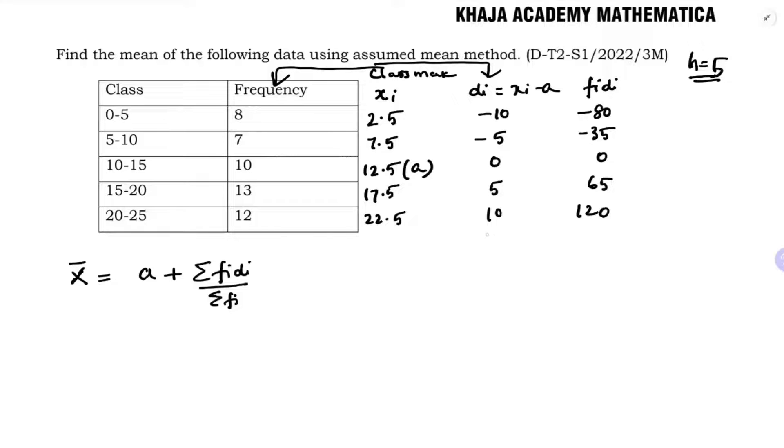Now summation of sigma fi di. Positive values are 185, and negative values minus 80 minus 35 is 115. So 185 minus 115 is 70.